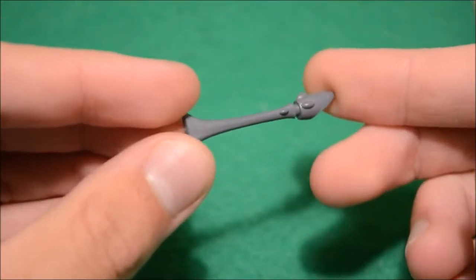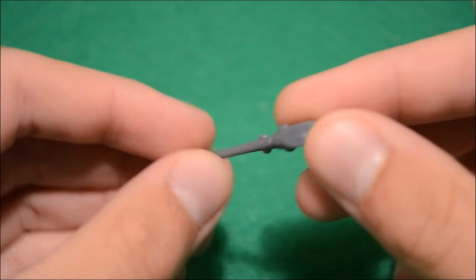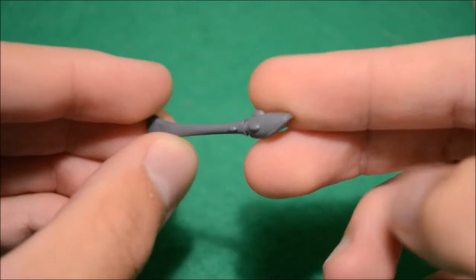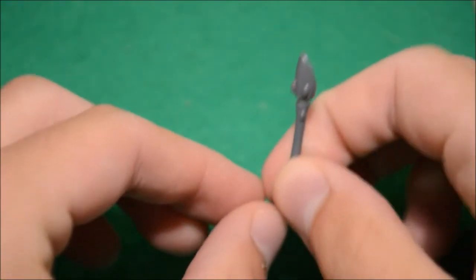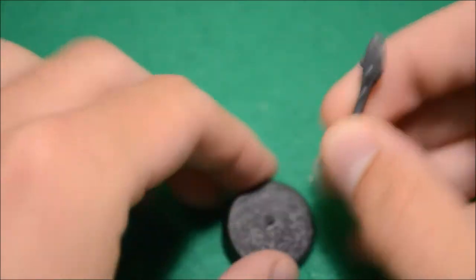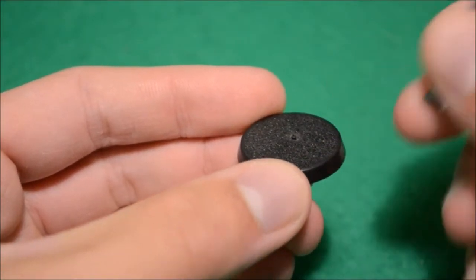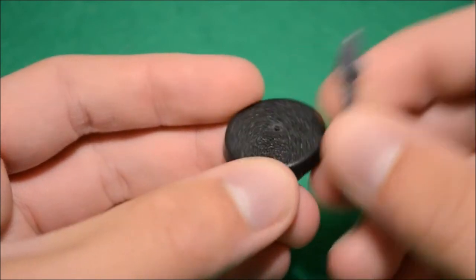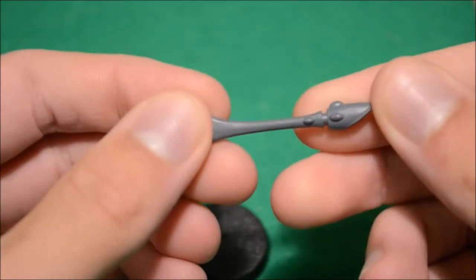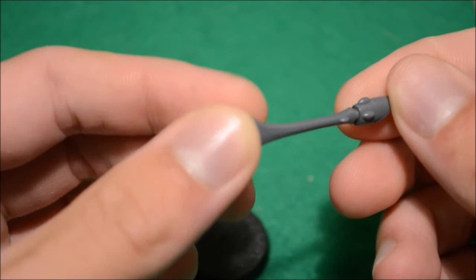This last piece is some sort of Eldar aerial from a Tau tank vehicle sprue. Nick is a big fan of Eldar, so I'm thinking of fitting this onto the base. The problem is Necron Lords have fairly small bases.